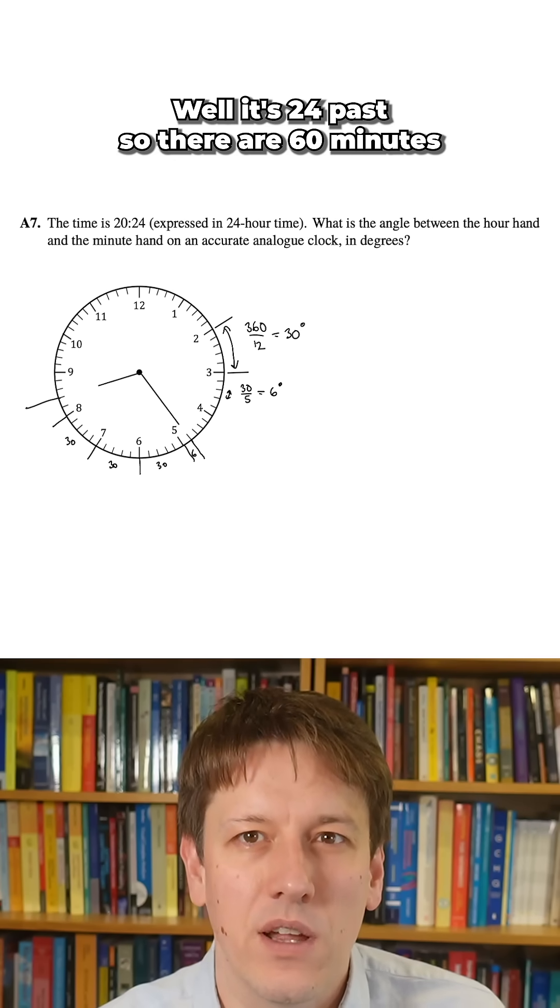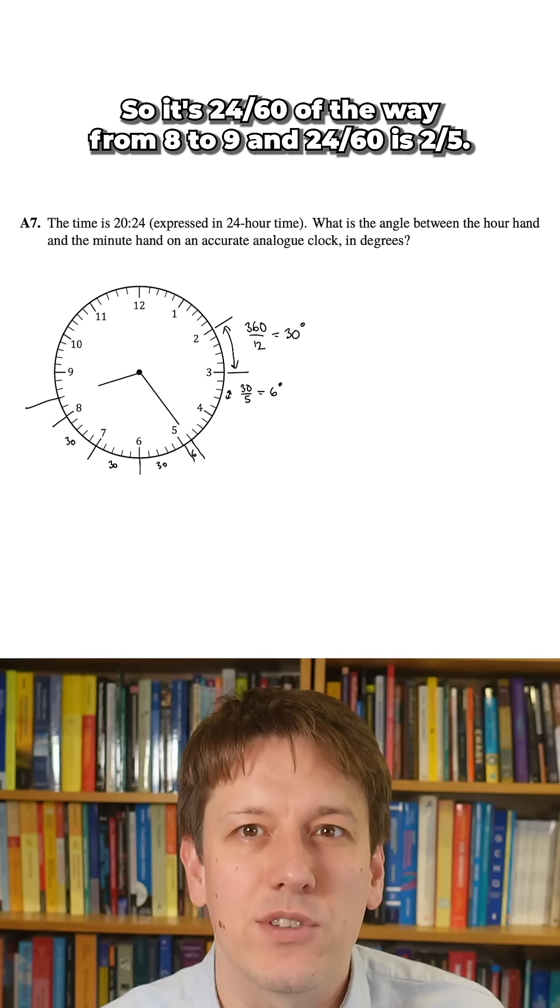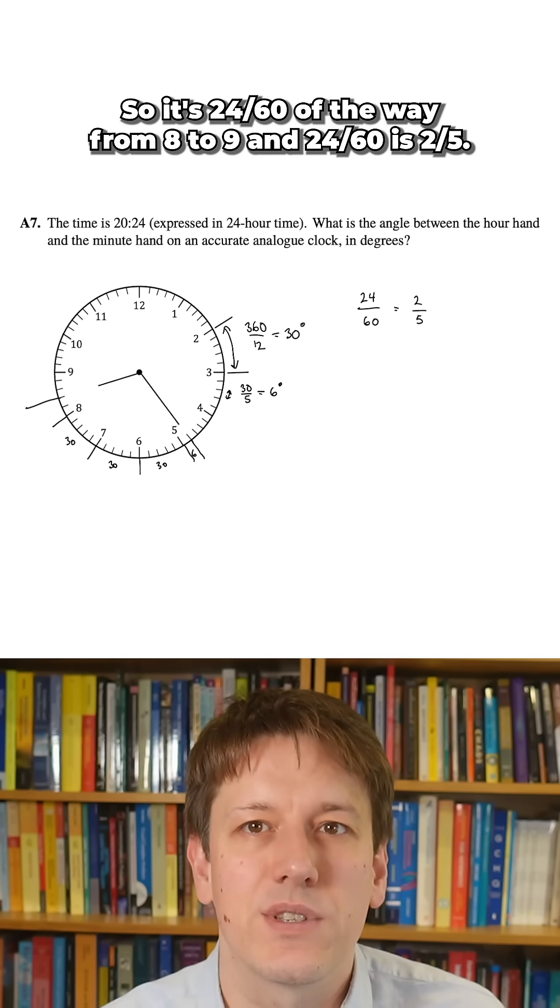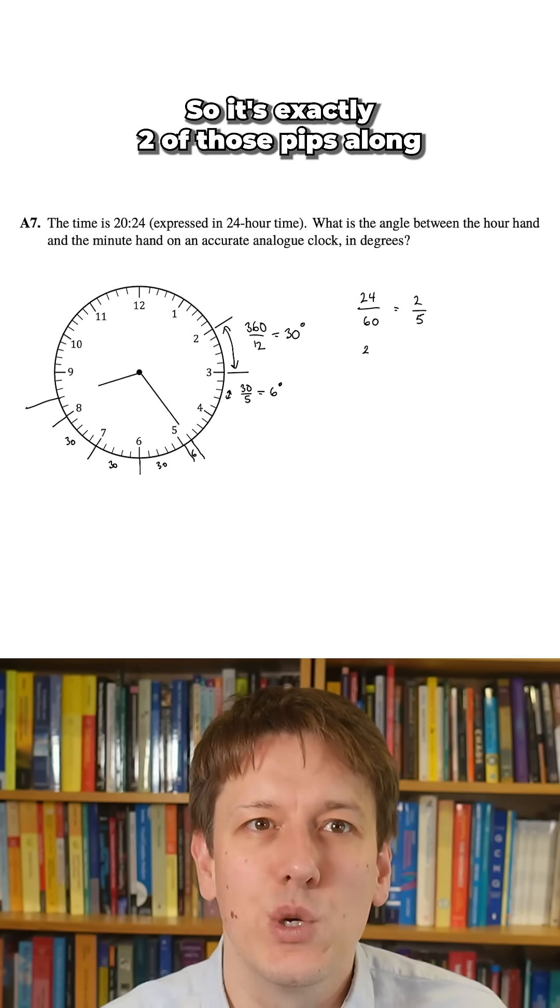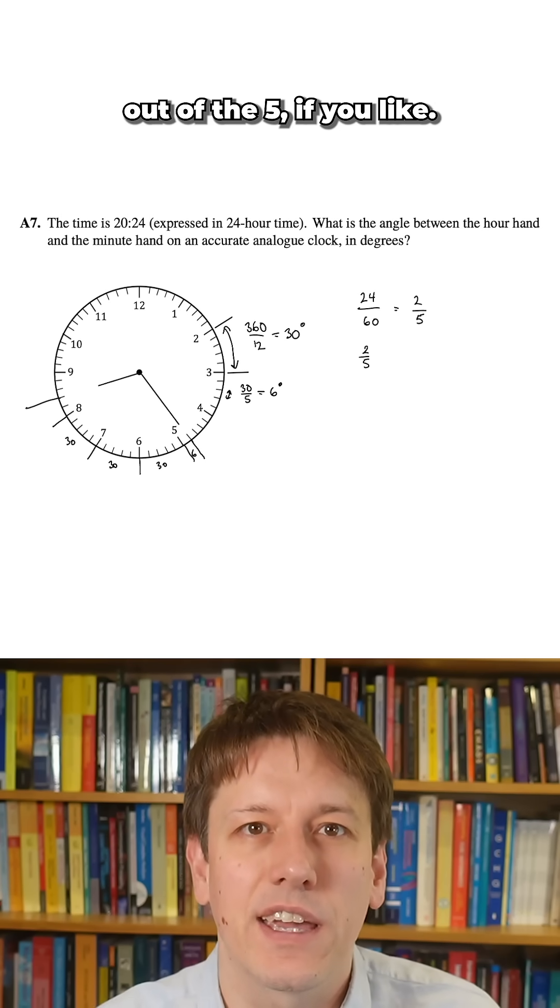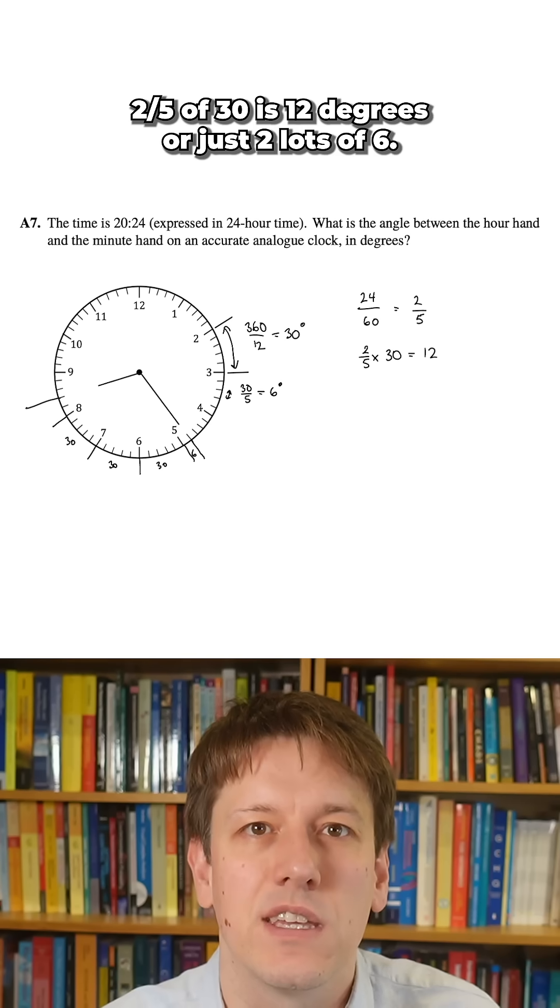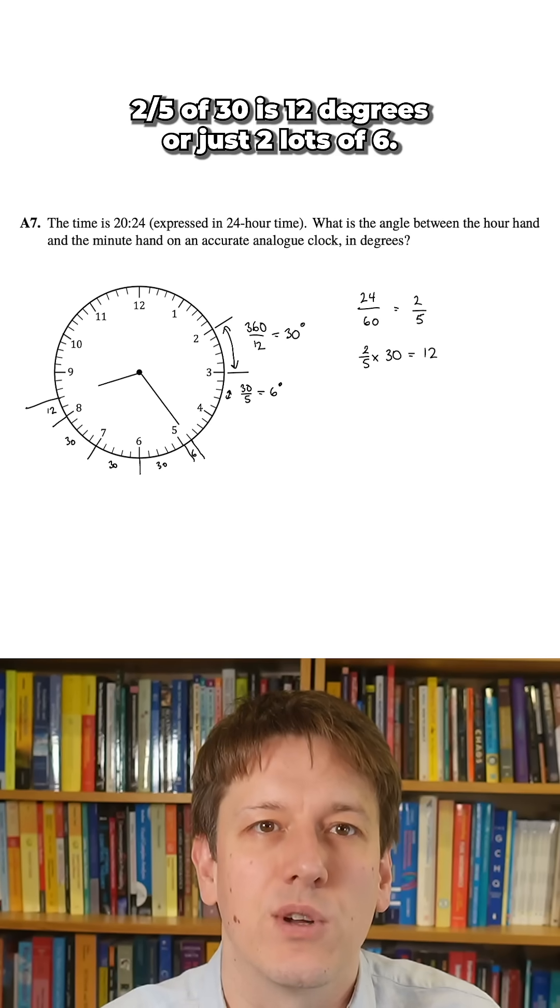Well it's 24 past, so there are 60 minutes in an hour, so it's 24 60ths of the way from 8 to 9, and 24 60ths is 2 5ths divided top and bottom by 12, so it's exactly two of those pips along out of the 5, or we can say 2 5ths of 30 is 12 degrees, or just two lots of 6.